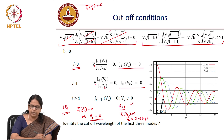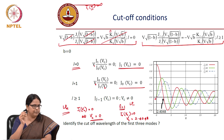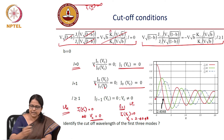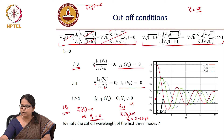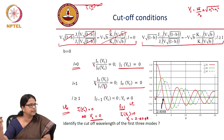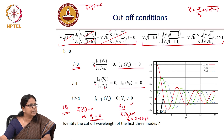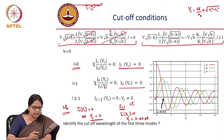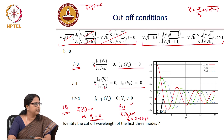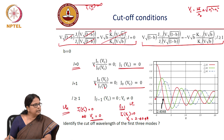The cutoff condition for the first mode is V_c equal to 0. By definition it means that if V_c is less than 0, no mode is supported. But V is 2π/λ times a times the square root of N1-squared minus N2-squared, which is K0 times a times root of N1-squared minus N2-squared. There is no physical reason why this number has to be negative, which is why we say the fiber will always support the fundamental mode — there is no cutoff for the fundamental mode.